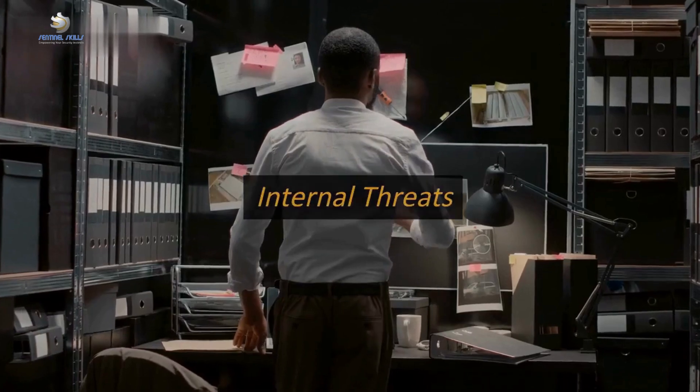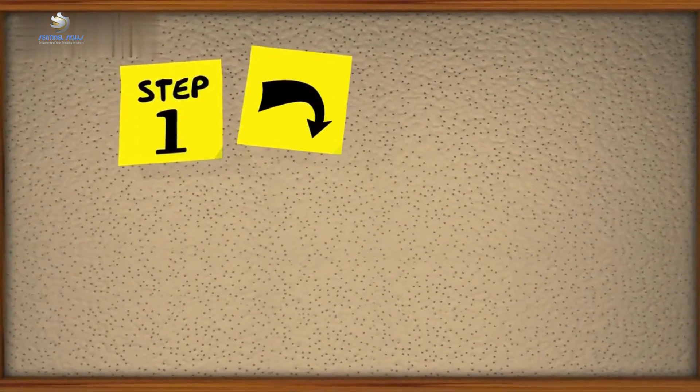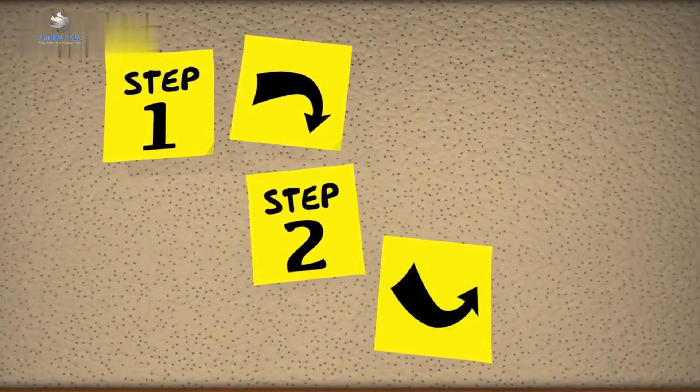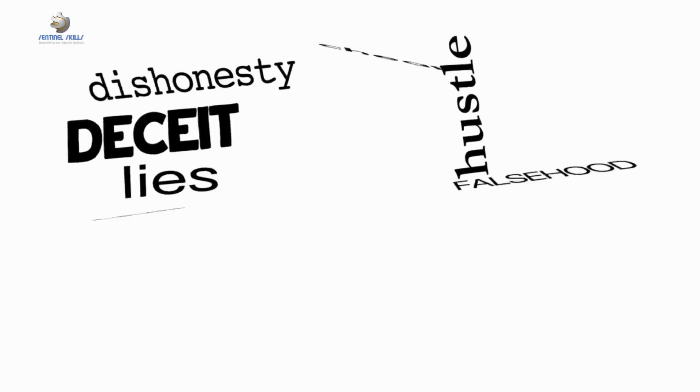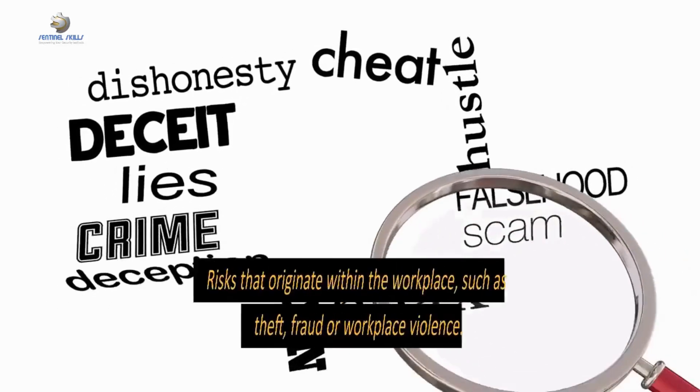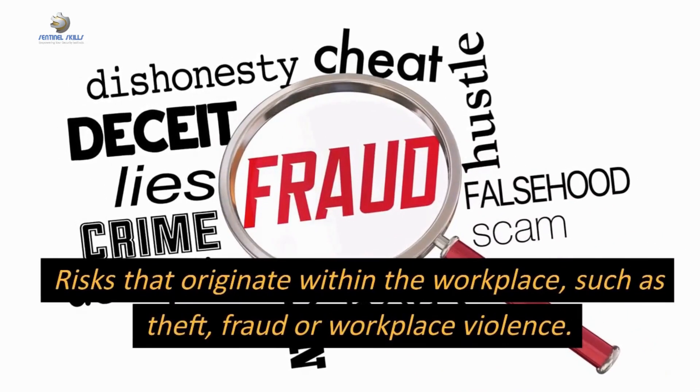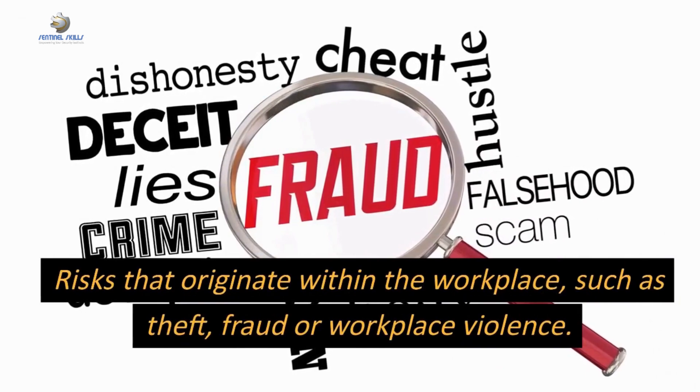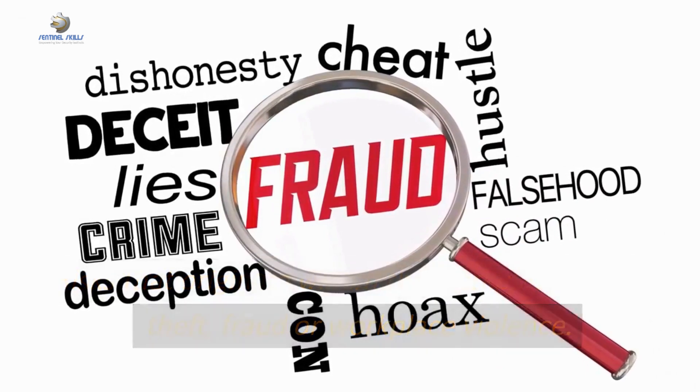The second step in securing your workplace is to address internal threats. Internal threats refer to those risks that originate within the workplace, such as theft, fraud or workplace violence. Examples include stealing company property, accessing sensitive information or threatening co-workers, fraud and other dishonest activities by employees.